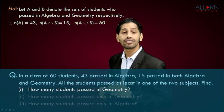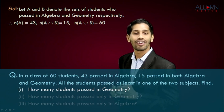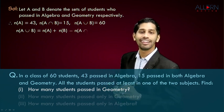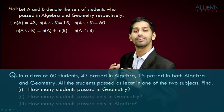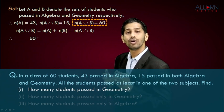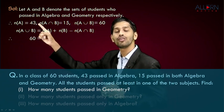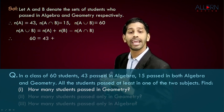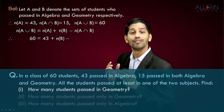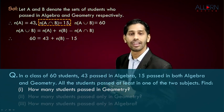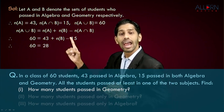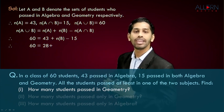Three values are given and we need to find N(B), so we use the formula: N(A ∪ B) = N(A) + N(B) − N(A ∩ B). Substituting the known values: 60 = 43 + N(B) − 15. Simplifying, 43 minus 15 gives us 28, so 60 = 28 + N(B).